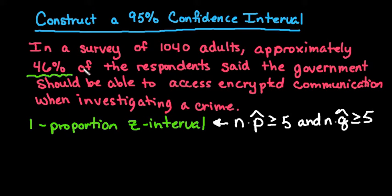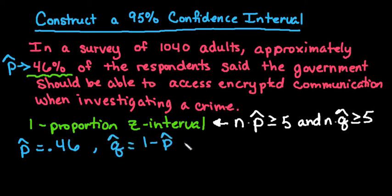As far as finding q̂ and p̂, p̂ is the percentage of the sample that was surveyed. So it's the proportion of your sample. So p̂ is 0.46. We always put it as a decimal. And q̂ is always 1 minus p̂. So if I do 1 minus 0.46, we would get 0.54.